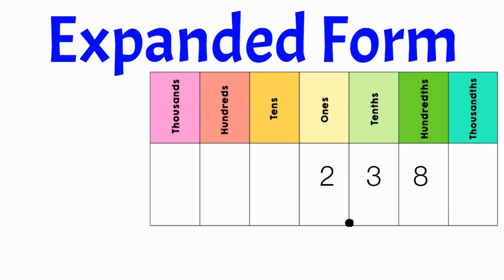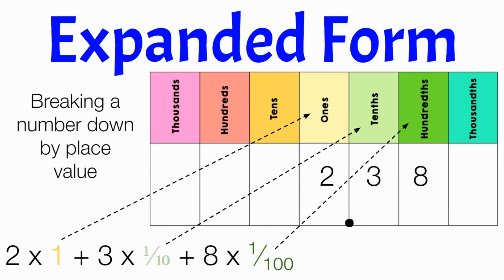And then we also have expanded form, and you can see that I've put the number on this place value chart. And to write the number in expanded form, it would look like this. Now look at the numbers that I've changed color. I've made these colors sort of match the places on the chart. So expanded form is like this. We have two ones. How many tenths do we have? We have three tenths, and then we also have eight hundredths. And so that's really what we're doing there. I'm showing that the two in this number stands for the ones place, and then I also have three tenths and eight hundredths. So we're just breaking the number down by its place value.